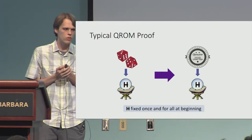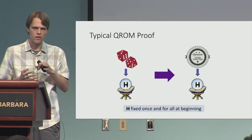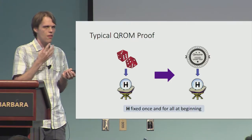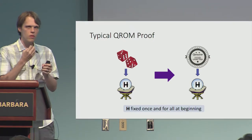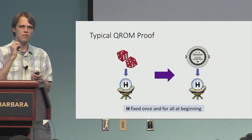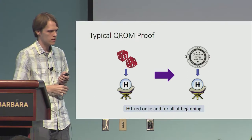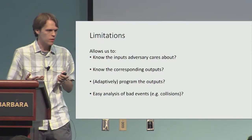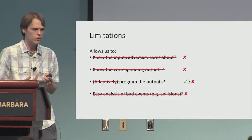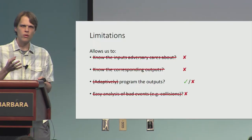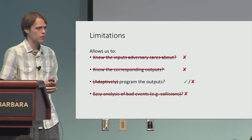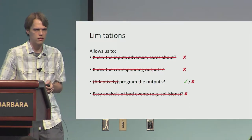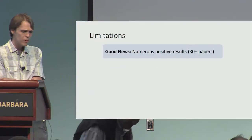To get around this issue, rather than use this on-the-fly simulation, what you do instead is you handcraft some distribution on functions that hopefully is indistinguishable from a random function. But the point is that you fix it at the very beginning of the experiment and just obliviously use this function to answer the random oracle queries. This is how typical proofs in the quantum random oracle model work. But there are a number of limitations: because we're answering obliviously, we don't know the inputs the adversary cares about, we don't know the corresponding outputs, programming can't be adaptive, and it becomes much less obvious how to analyze bad events — you have to prove quantum query complexity lower bounds to do so.